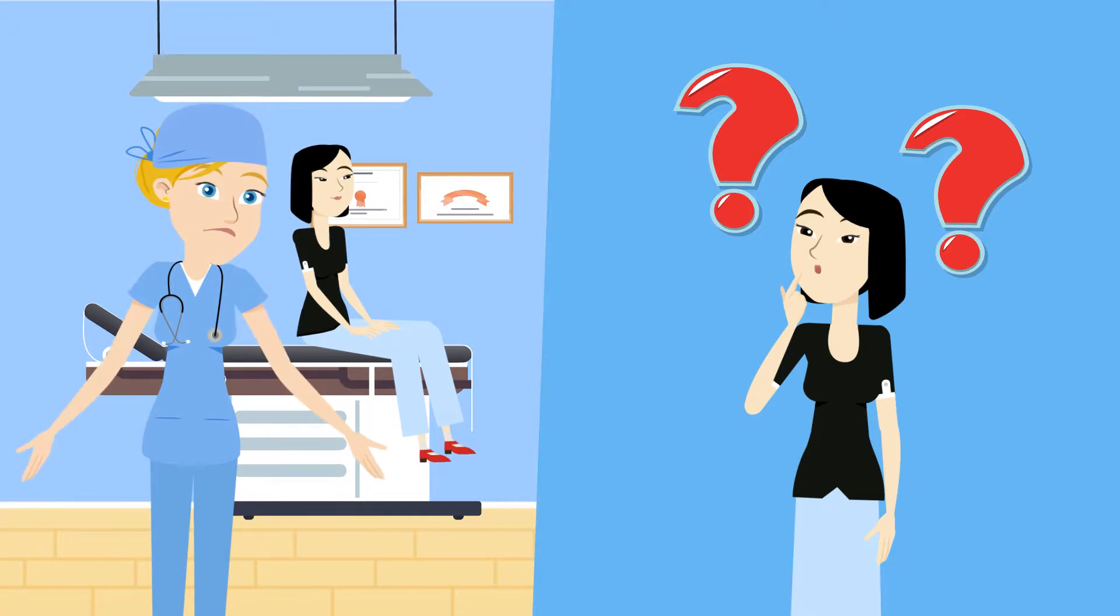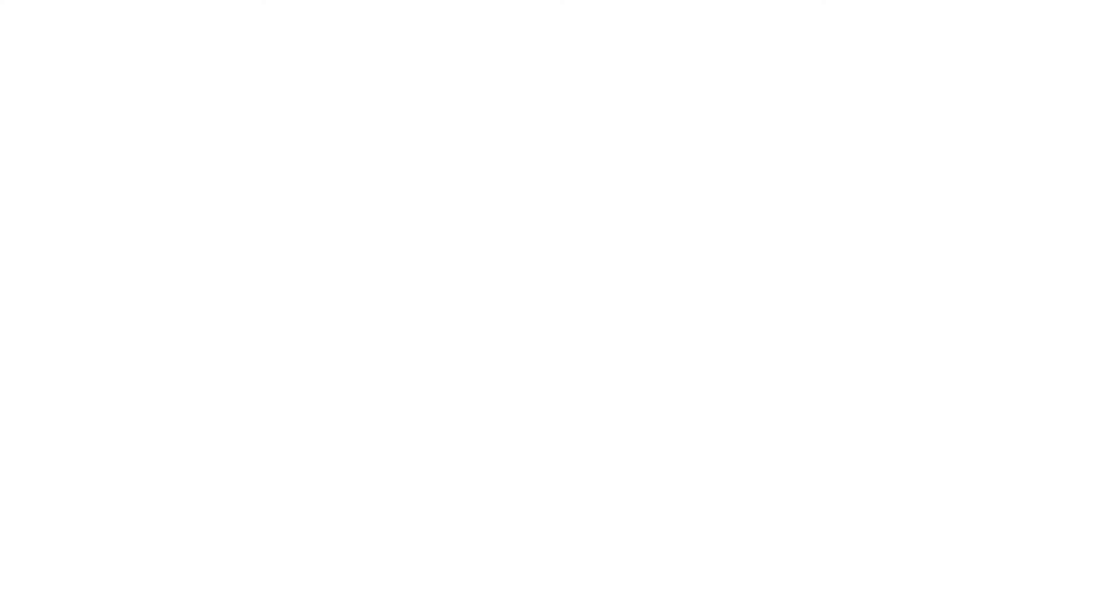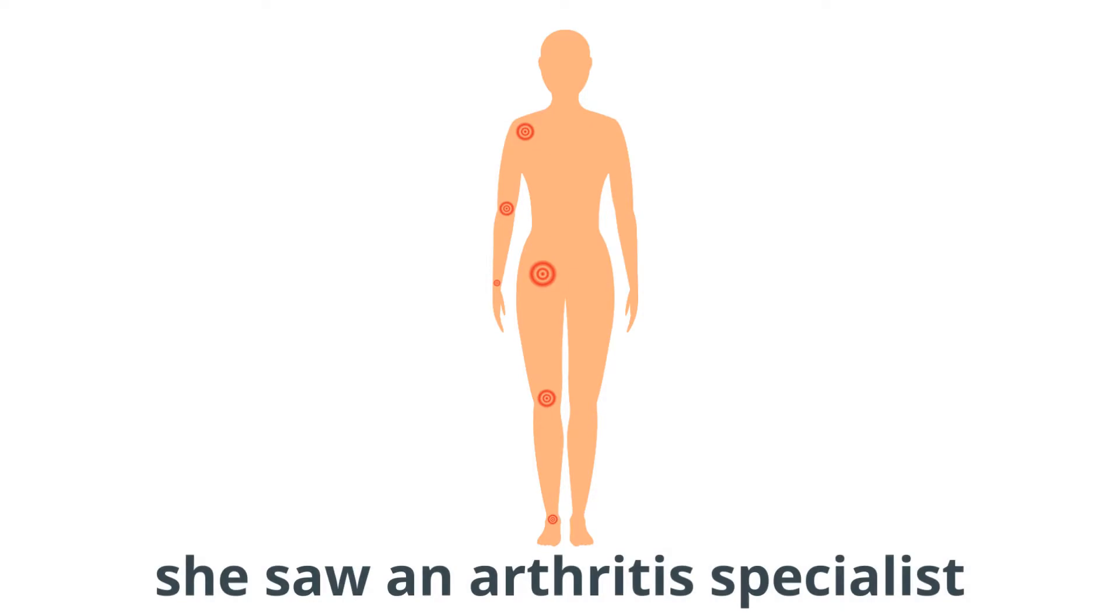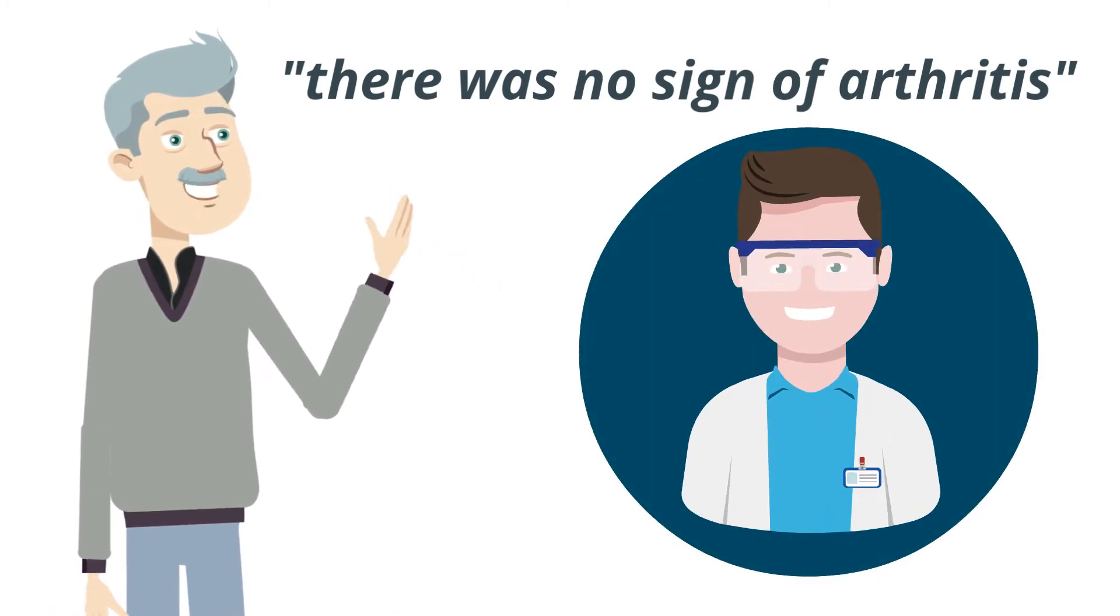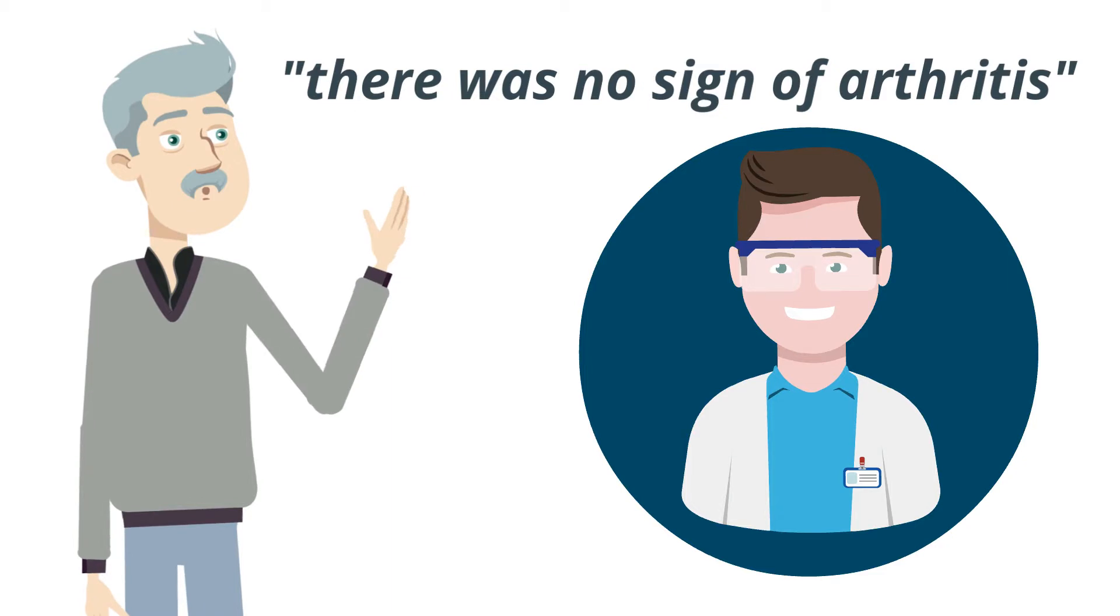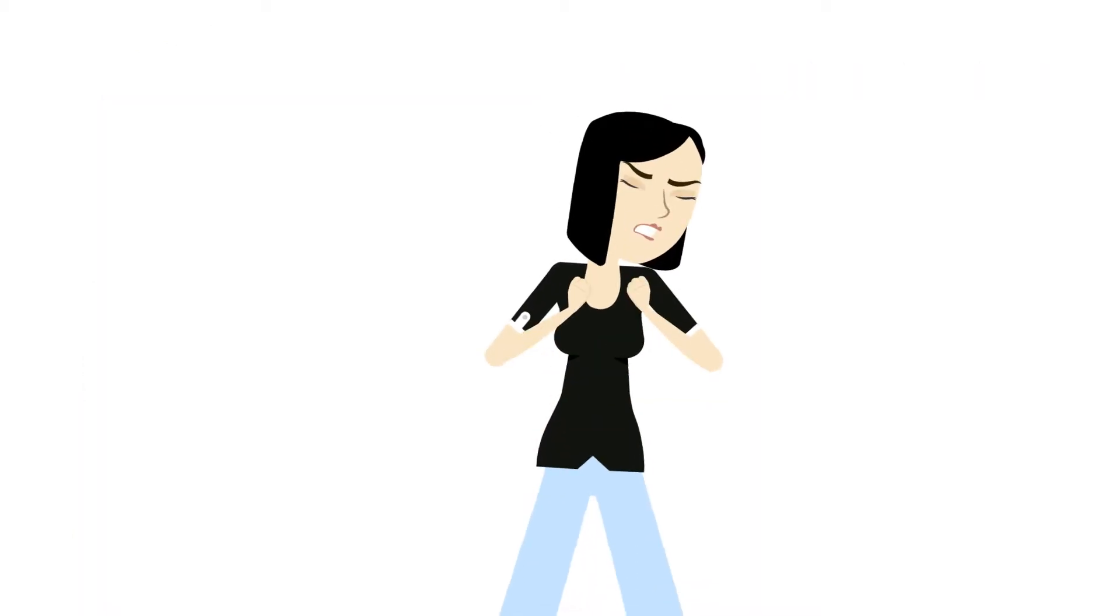After more medical visits, the doctors could still not find the cause of her pain. When her pain moved from her muscles to her joints, she saw an arthritis specialist. The rheumatologist told her there was no sign of arthritis and suggested she see a psychiatrist. This made her angry and depressed.